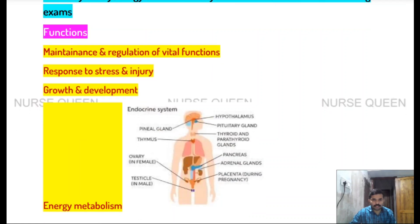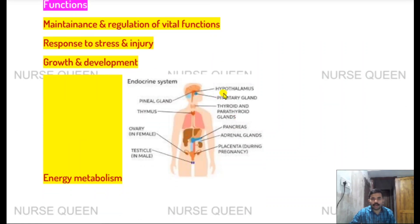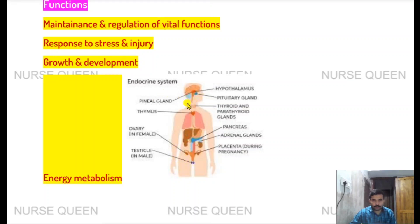The endocrine system includes: pineal gland, hypothalamus, pituitary gland, thyroid and parathyroid gland, thymus gland, pancreas, adrenal gland, placenta during delivery, ovary in female, and testicle in male.